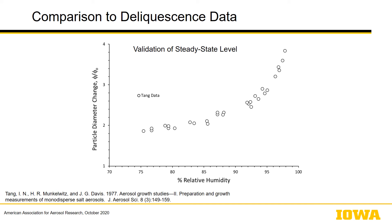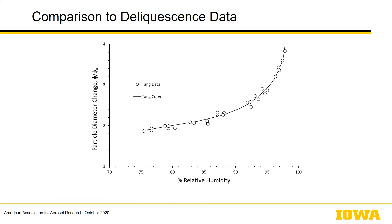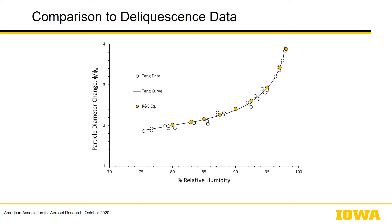To examine steady-state behavior, we used values from Tang et al., which are steady-state equilibrium diameters relative to the initial droplet diameter. The Raoult equation underestimates at the low relative humidity end but overestimates at the high end around 99.5%, whereas the RNS polynomial equation closely matches the Tang curve throughout the entire relative humidity range.